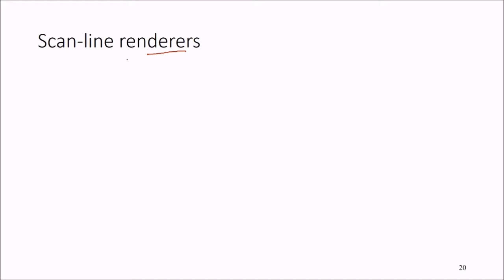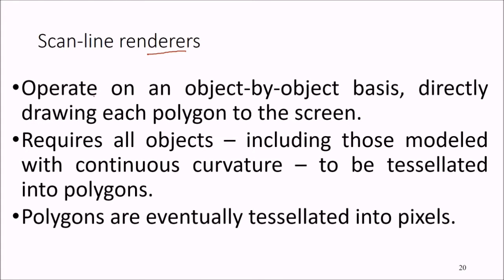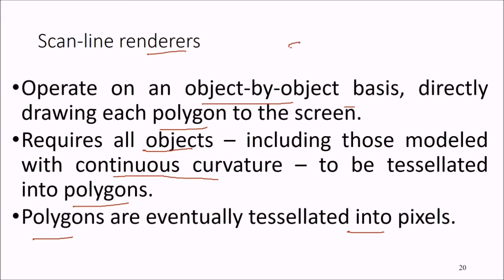The other approach is scan line renderers — these operate on an object-by-object basis, directly drawing each polygon on the screen. This requires all objects, including those with continuous curvature, to be tessellated into polygons, and those polygons are eventually tessellated into pixels.